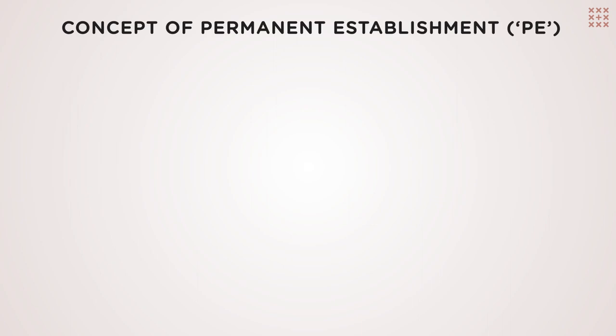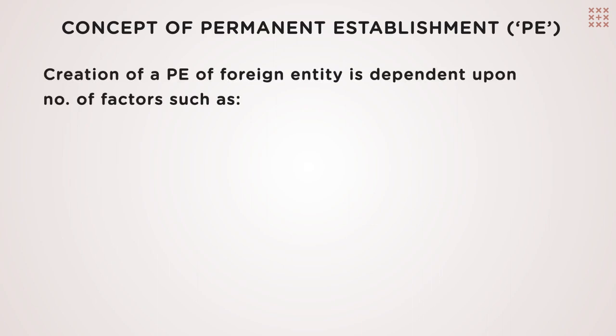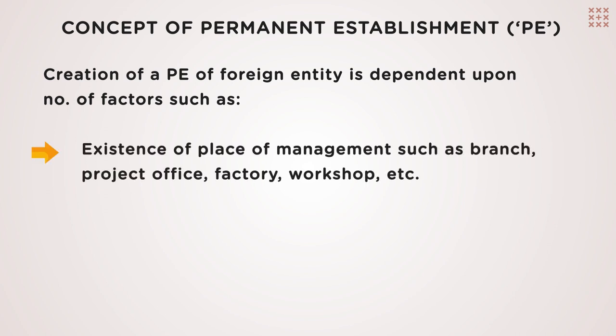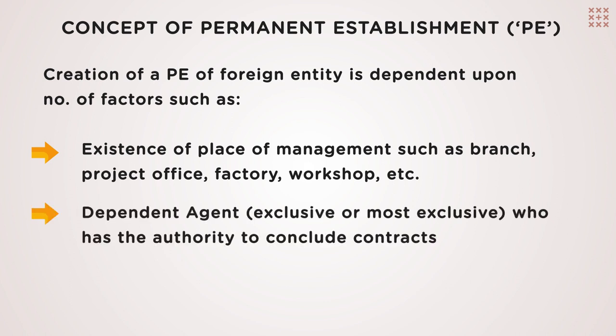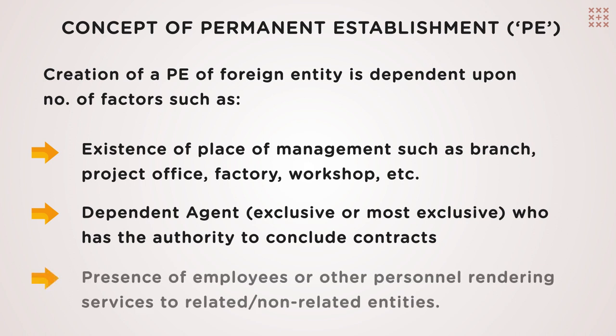Elaborating more on the concept of a permanent establishment, or PE, its creation is dependent upon a number of factors — such as existence of a place of management like a branch, project office, factory, or workshop; a dependent agent who has the authority to conclude contracts; and the presence of employees or other personnel rendering services to related or non-related entities.